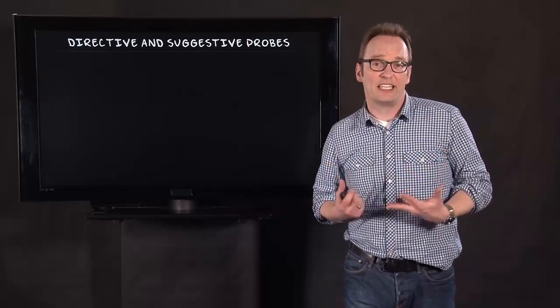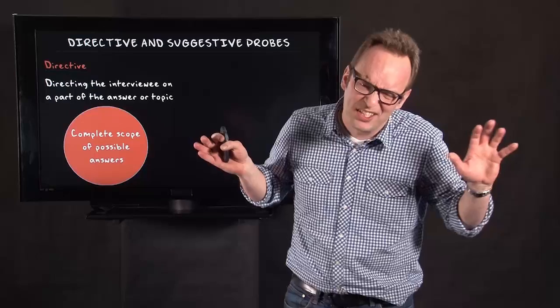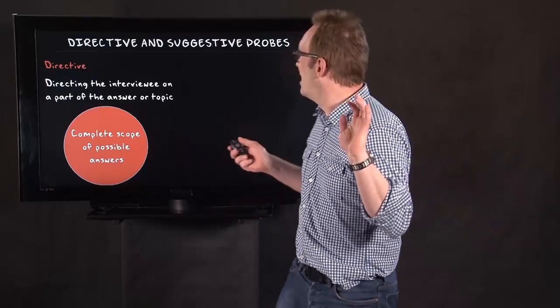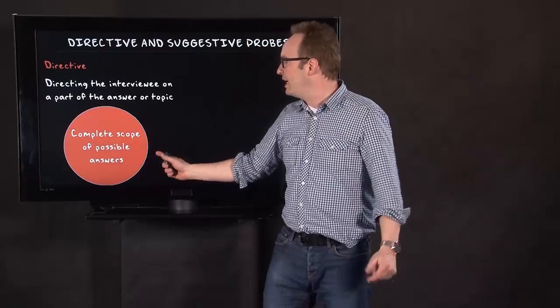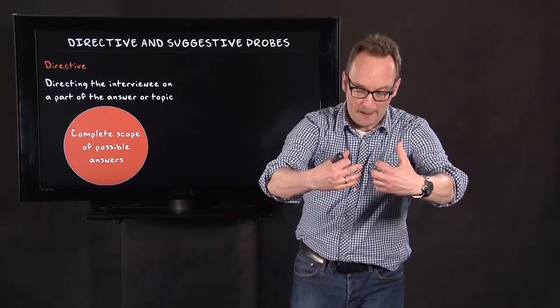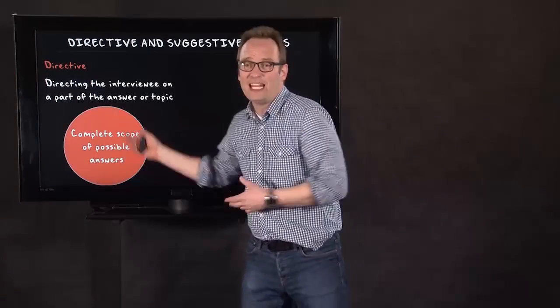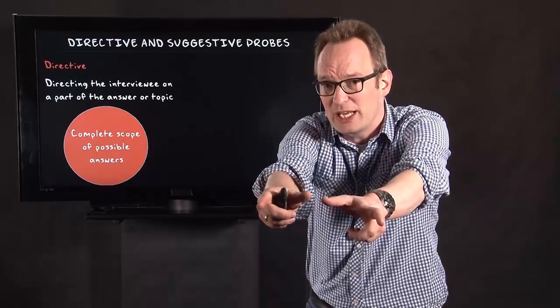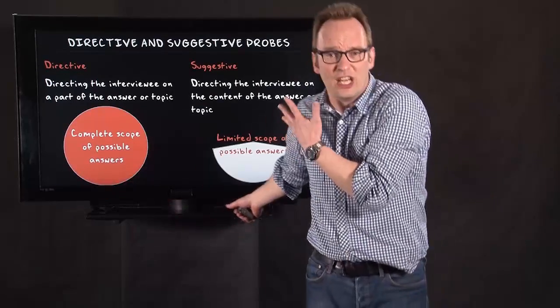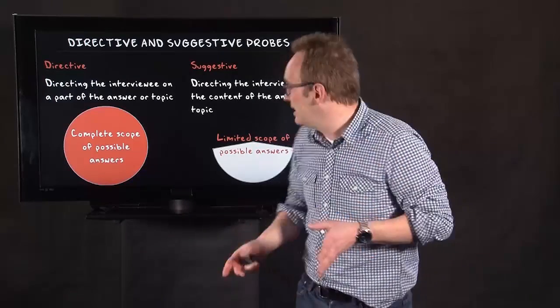Another important distinction is the distinction between directive and suggestive probes. And, again, we have some sort of scales, not so much of a dichotomy. But if we visualize directive probing like this, meaning you can give the interviewee a direction, but within that direction, there's a complete scope of possible answers. You can't answer anything, but it has to be on this topic. Whereas, in suggestive probing, you only give a limited scope, a limited possibility of answering.